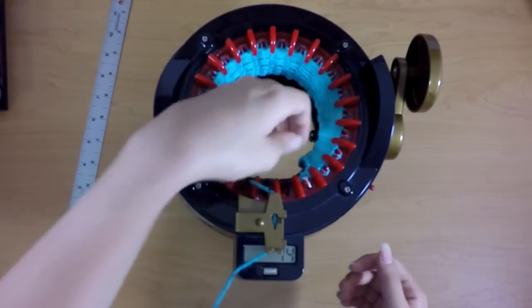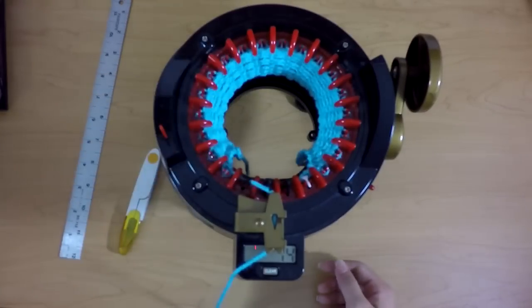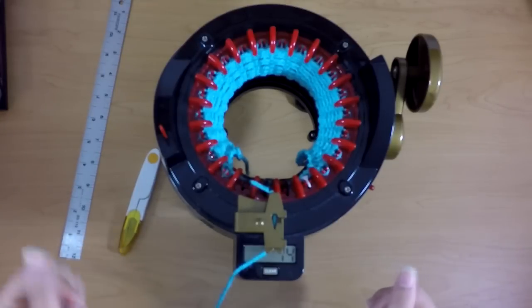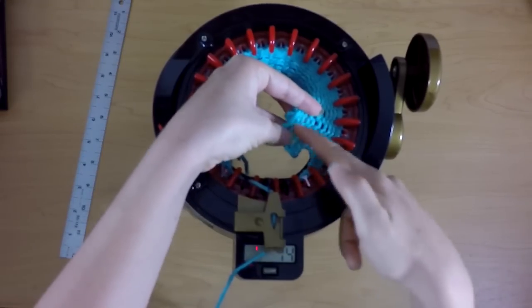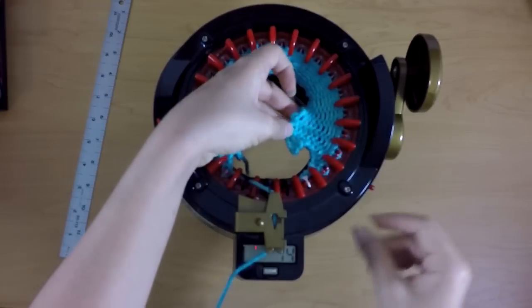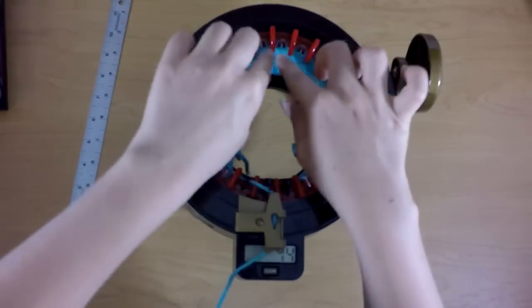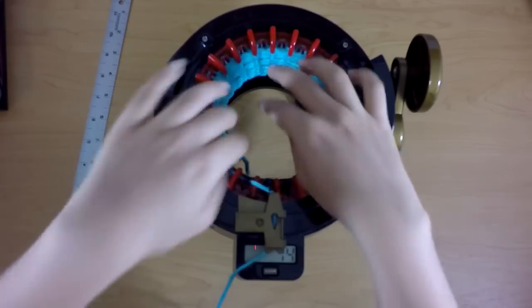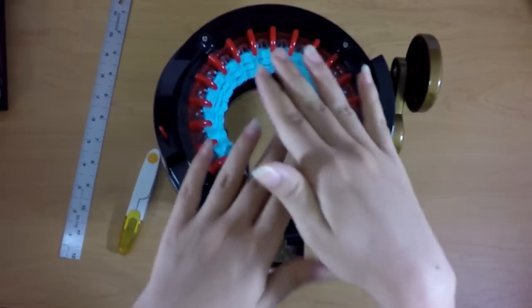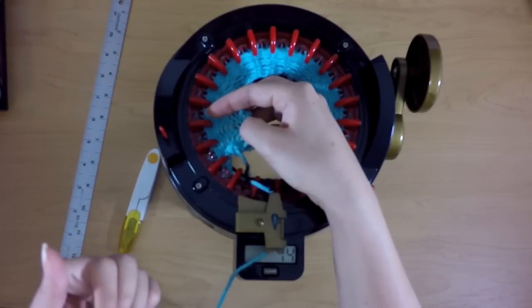But that is how you make a flat panel on your Addi machine, and when you are finished and it's as long as you want it to be, you want to remember that when you measure it, you cannot measure like this and get an exact accurate measurement because it's stretched so much to get around these needles that it shrinks lengthwise. So you can really only measure it accurately when it's off the machine.